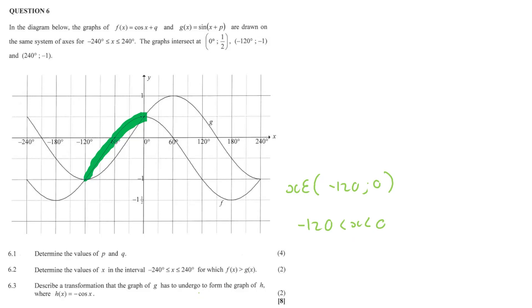Question 6.3: describe a transformation that the graph of g must undergo to form the graph of h, where h(x) = −cos x. The graph of g would have to shift 60 degrees to the left — from negative 30, shifting to here, here, and here.